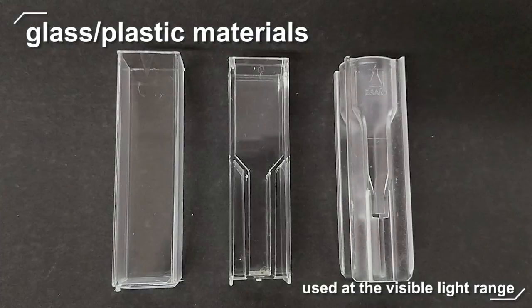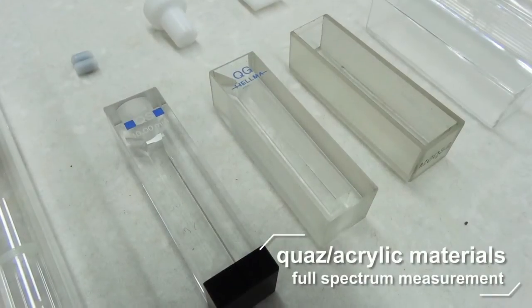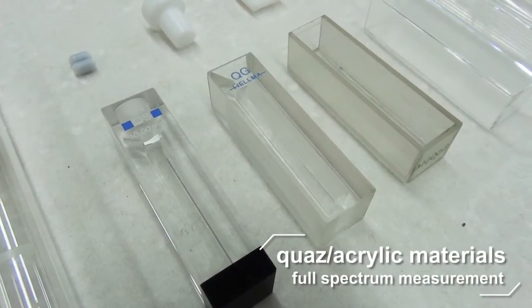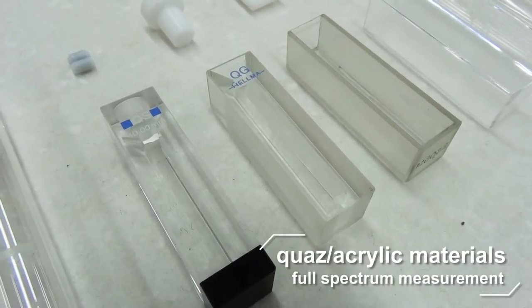Glass or plastic materials absorb ultraviolet light, thus can only be used at the visible light range. Quartz or acrylic materials, on the other hand, are suitable for full spectral measurement.